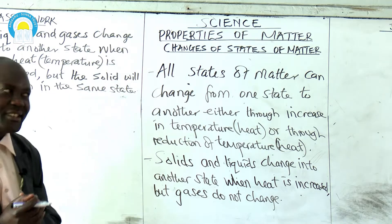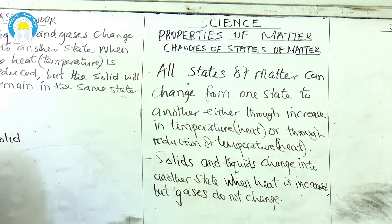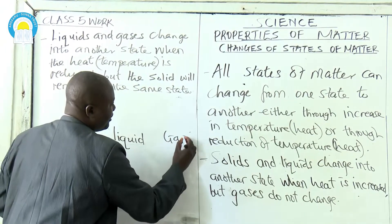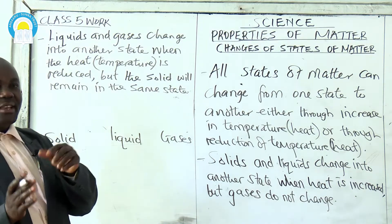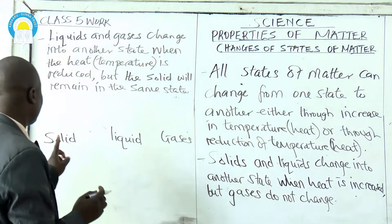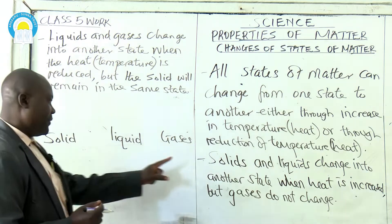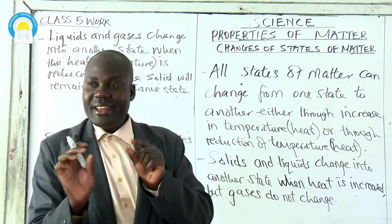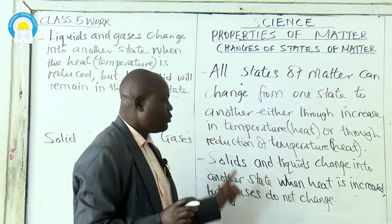We can explain this in summary by having a drawing. For example, you can have a solid, then this solid goes to what you call liquid, and then to what you call gases. Matter has only three states: solid, liquid, and gases. If solid and liquid are placed where there is an increase of heat, they are going to change into another state. But gases will remain the same.